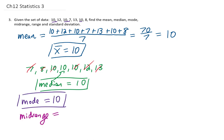Moving on, our midrange is always the average of the smallest and the largest data value. The smallest data value is 7. The largest data value we have in this list is 13. To average those two, we add them up and we divide by 2. That's giving me 20 over 2, or 10, so our midrange is 10 as well.